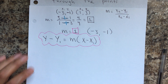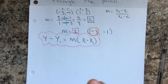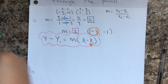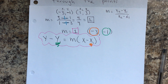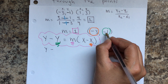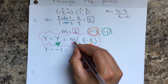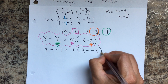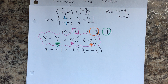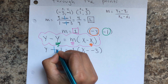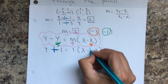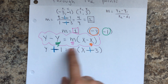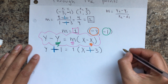Remember that the slope is 1, x is the orange value, and y is the yellow value, and we start replacing. So: y minus negative 1 equals 1 times x minus negative 3. Notice how we have a negative and a negative — be careful. Remember that negative and negative together make a big plus. So that becomes positive 1 and positive 3. We continue with distributive property.